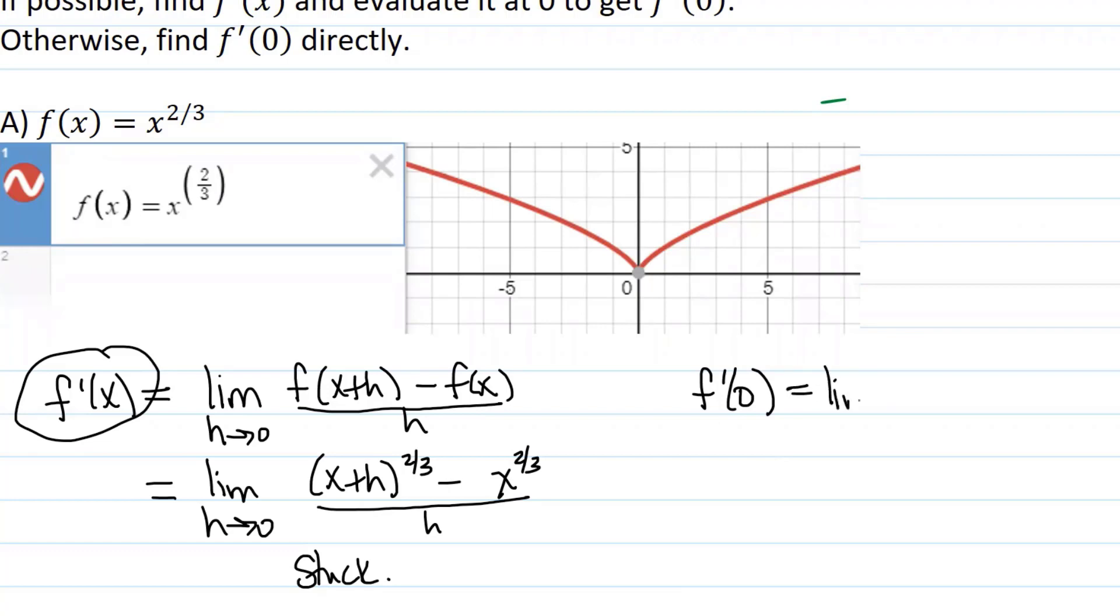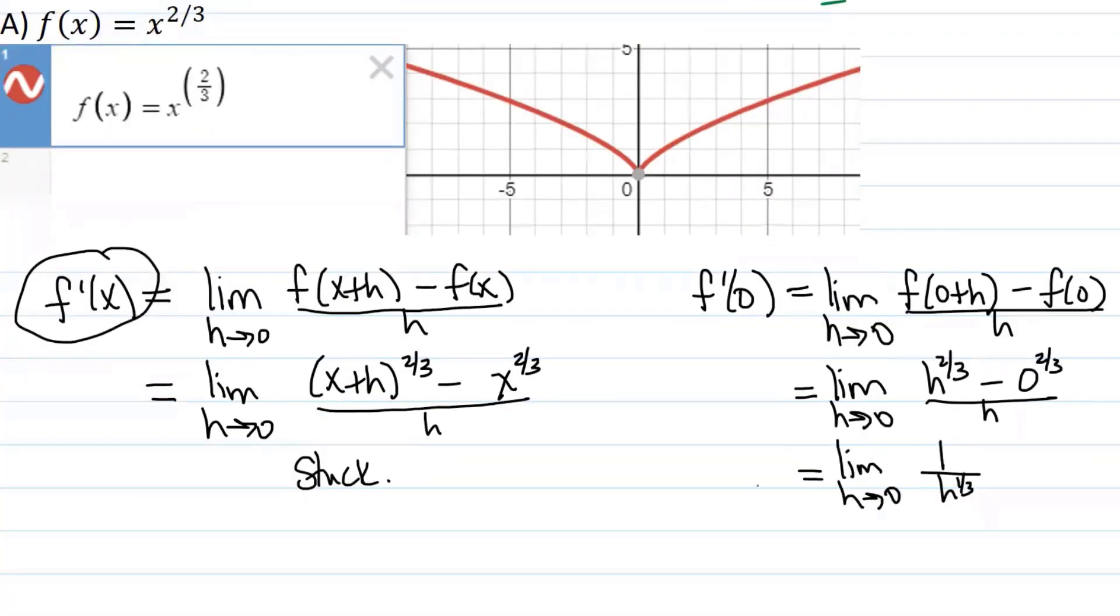So that would be the limit as h goes to zero of f of zero plus h minus f of zero divided by h. So this is going to be the limit as h goes to zero of h to the two-thirds minus zero to the two-thirds divided by h. Well that's the limit as h goes to zero of one over h to the one-third, or you could think of it as one over the cubed root of h either way. What is that limit equal to?